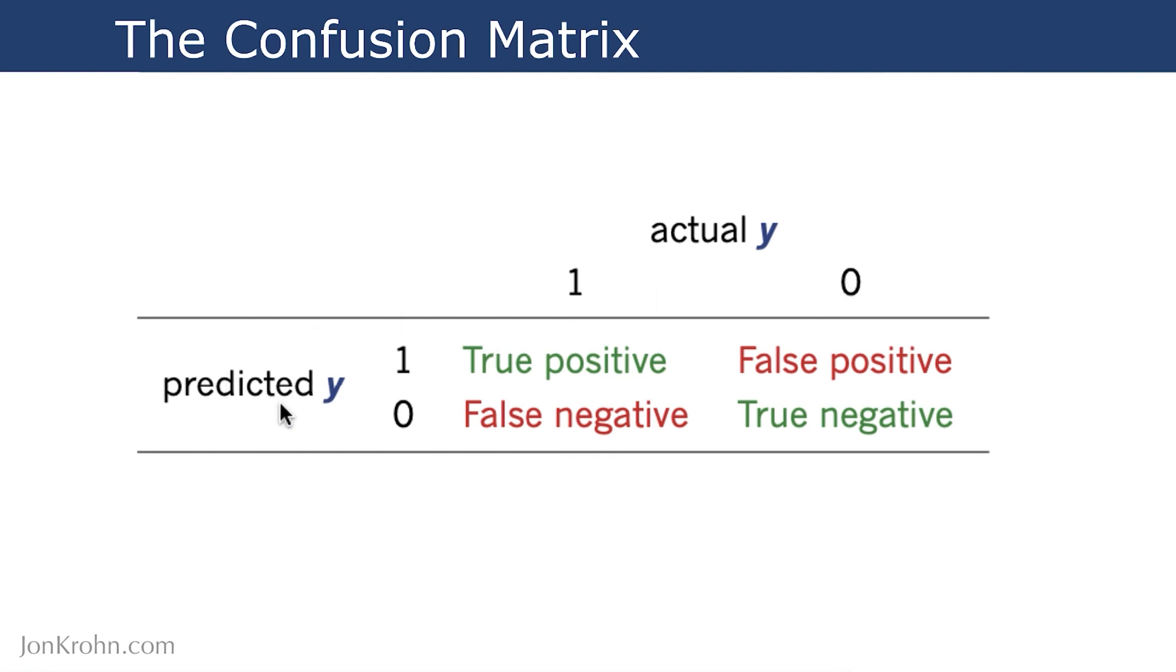The predicted Y is, in the case of machine learning, what our algorithm has predicted. A prediction of one indicates that our algorithm has predicted that yes, there's a hot dog there, following along with the example, or zero, that it predicts there is not a hot dog there.